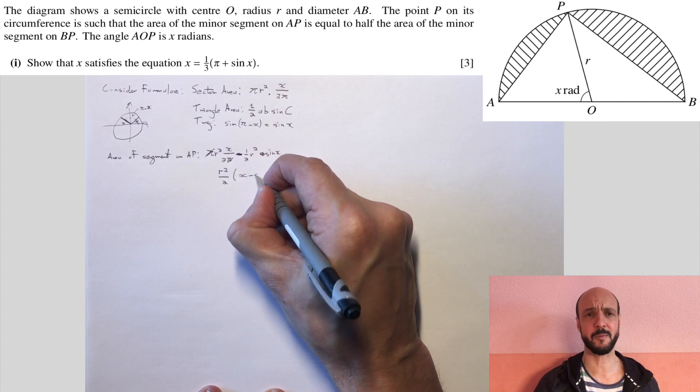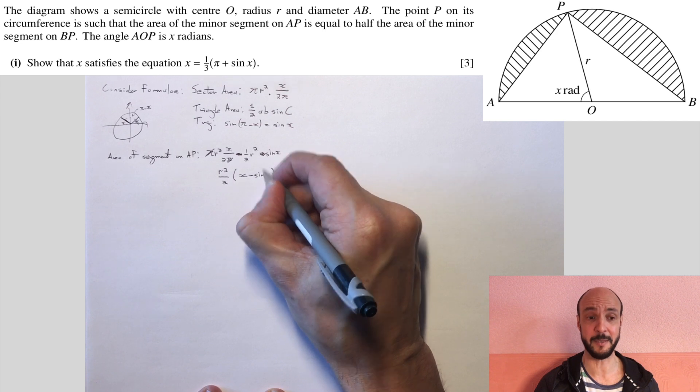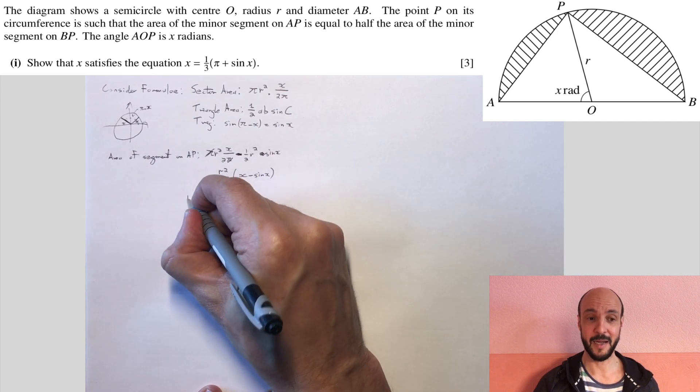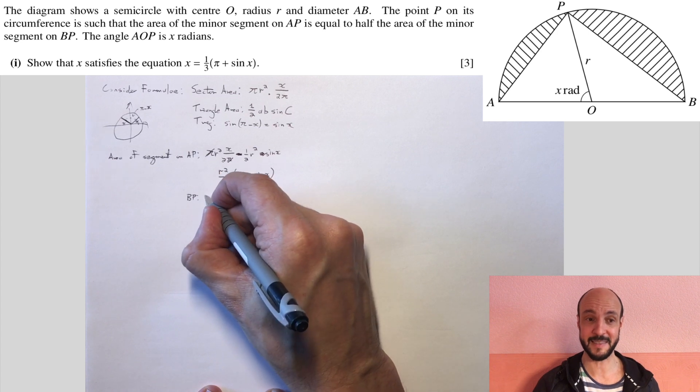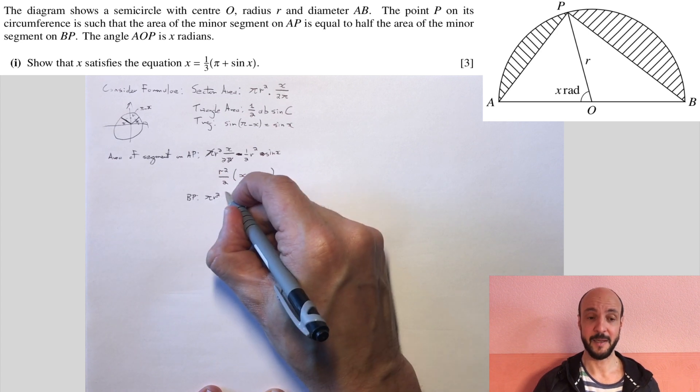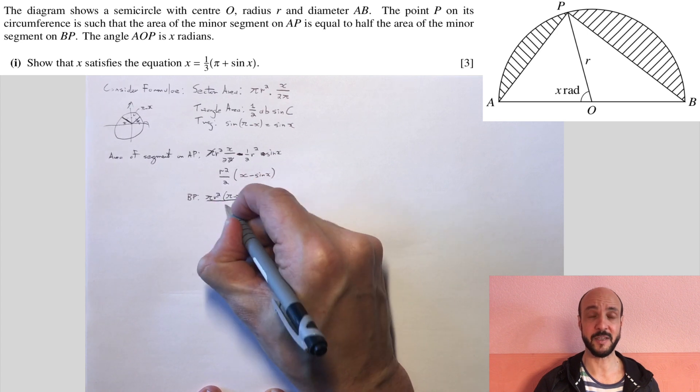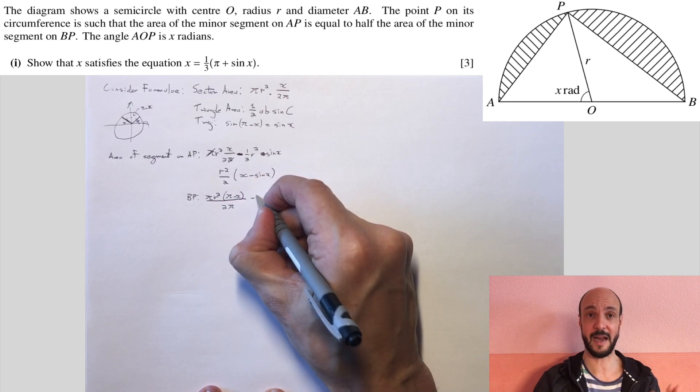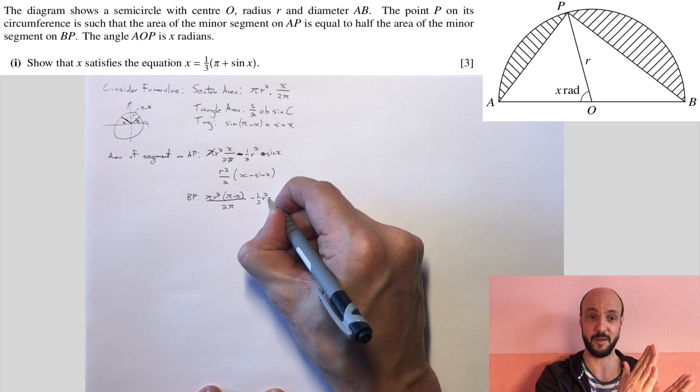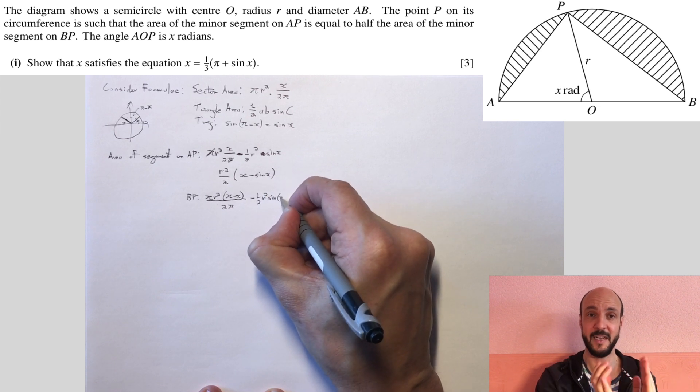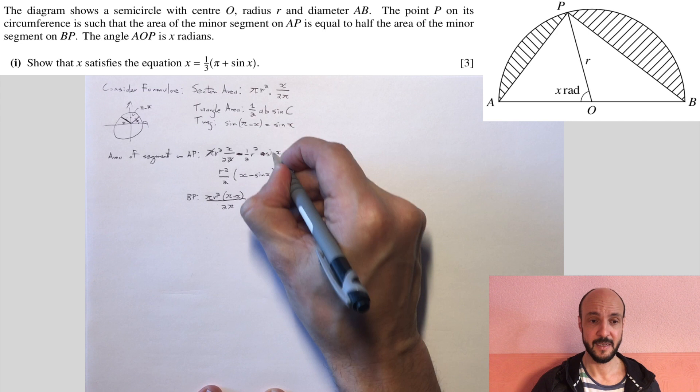And if we do a similar thing with the area of the segment on BP, we get pi r squared times by pi minus x over 2 pi minus half r squared sine pi minus x. I'm using the fact that this is a semicircle, so the angle across the full semicircle is pi. So if I take off the x that we know is on the left there, we're left with pi minus x.